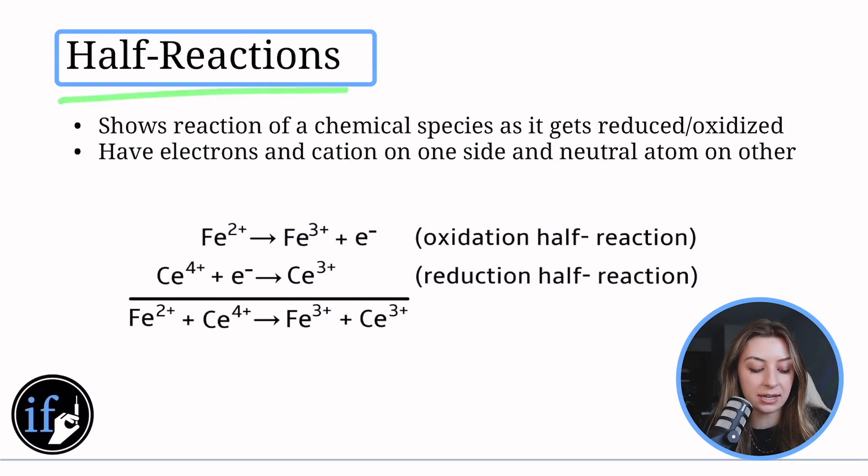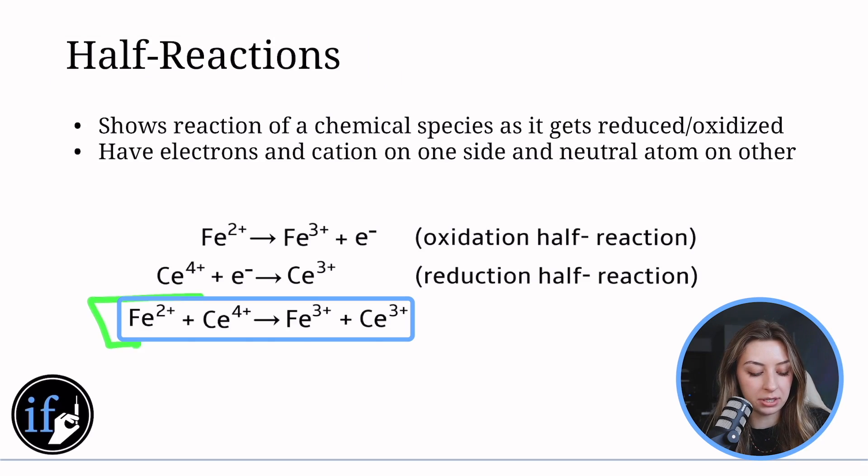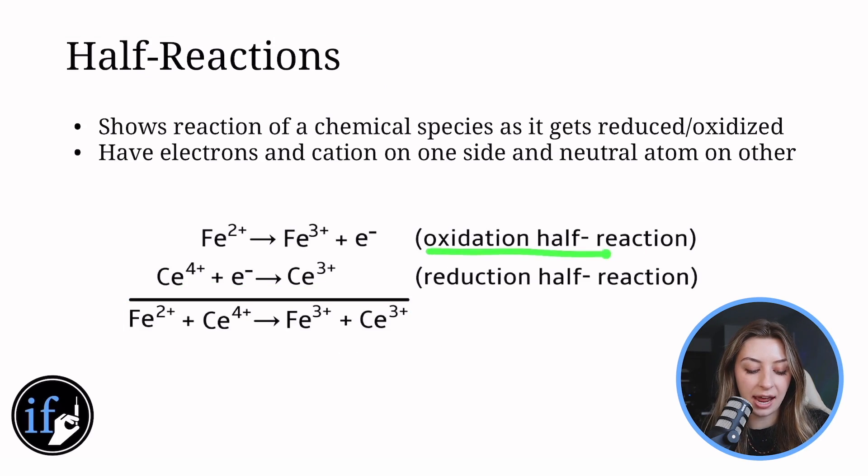A way that these reactions can be written—normally it's going to be two species on one side and two species on another—but another way that you can write these is in a half reaction. What that does is, here's the whole equation down here, you break it up into the oxidation half reaction and the reduction half reaction. In that case you see where your electrons are because you write your electrons in these.